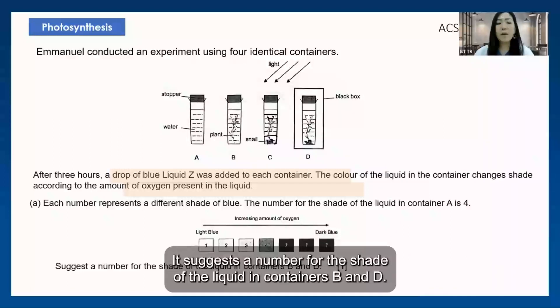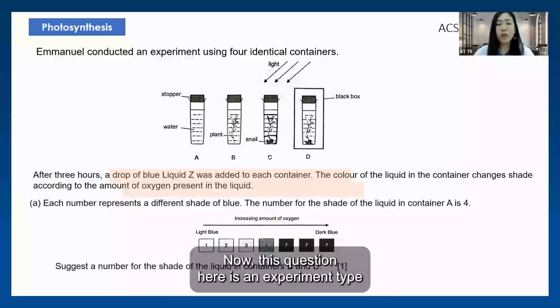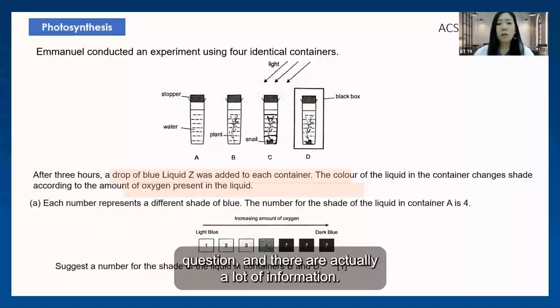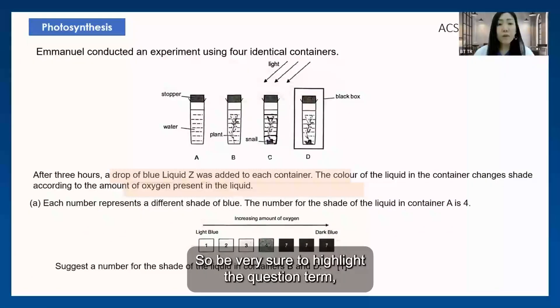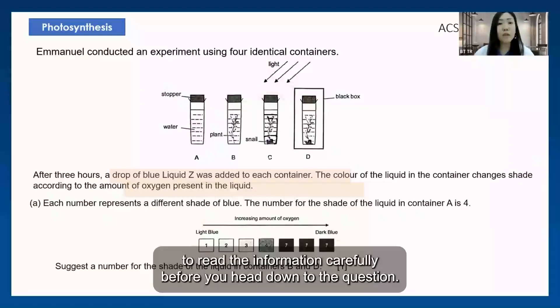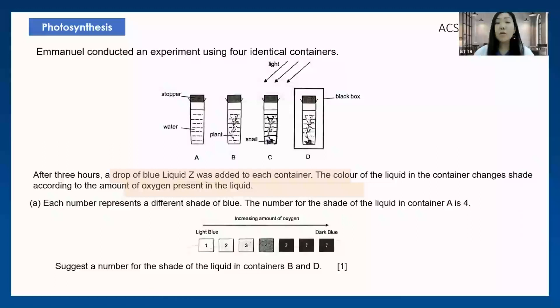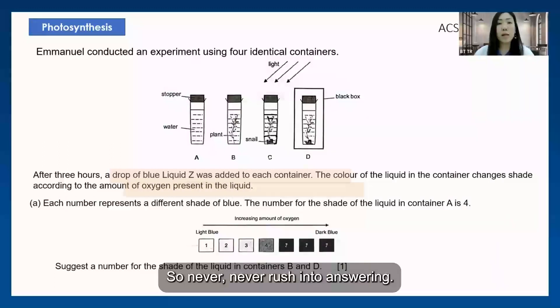Let's look at the question: suggest a number for the shade of the liquid in containers B and D. This is an experiment type question and there's actually a lot of information, so be very sure to highlight the question terms and read the information carefully before you head down to the question. Never rush into answering.